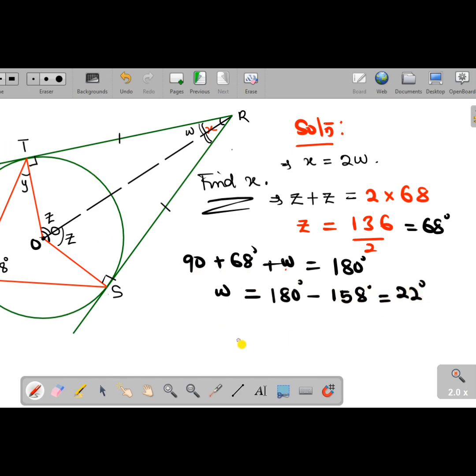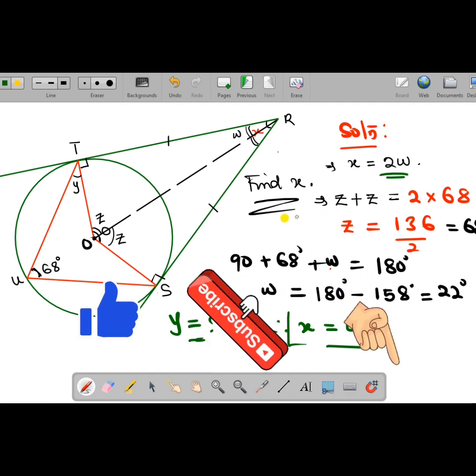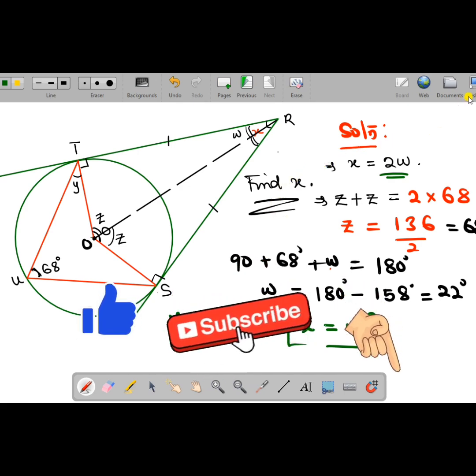I've been able to get my w as 22 degrees, therefore my x is 22 times 2 according to what we said, and that is 44 degrees. It is very simple. I would like you to get the value of y for me in this diagram. Comment your solution in the comment section and give a thumbs up to this video. Subscribe to our channel if you have not done so. We'll see you in our next video, bye.